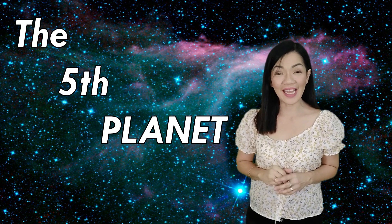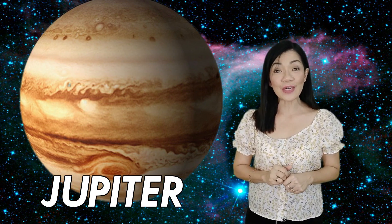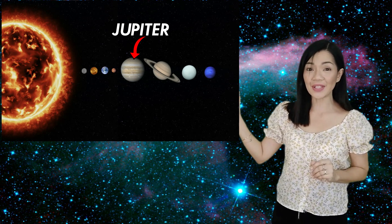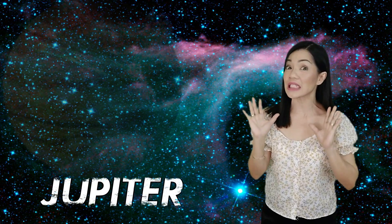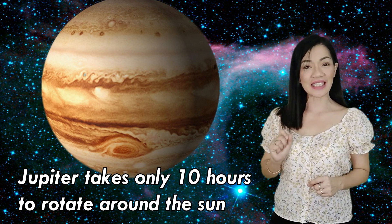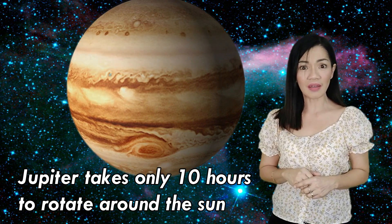The fifth planet is Jupiter. Jupiter is the first gas planet. It's the massive planet in between Mars and Saturn. I mean, Jupiter is huge. It's the biggest planet in the solar system. Jupiter takes only 10 hours to rotate around the sun. Very fast, yeah?